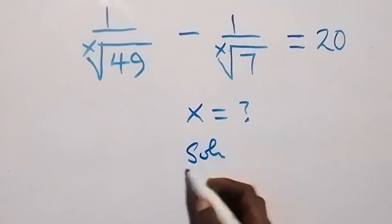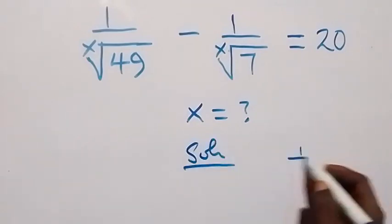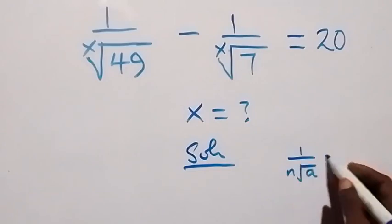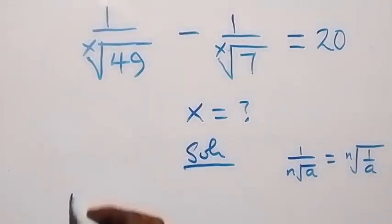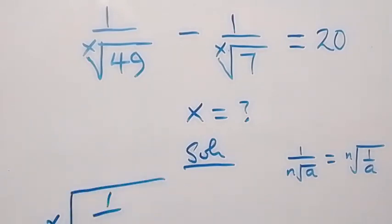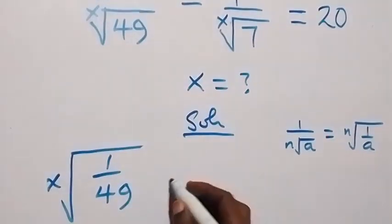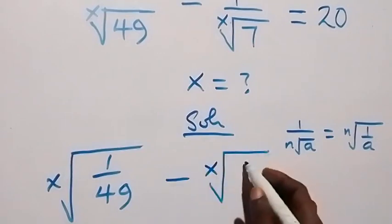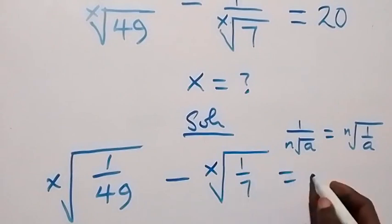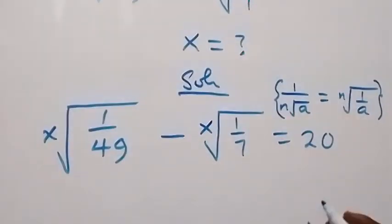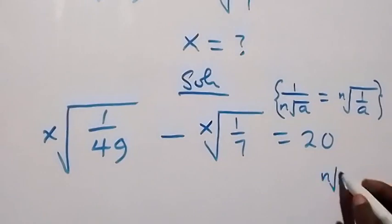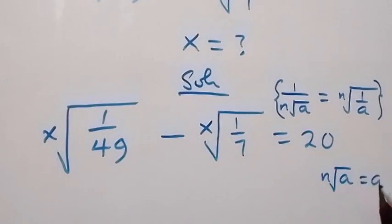From what we have here, we can write this using the format where we have 1 over the nth root of a. This is the same thing as the nth root of 1 over a. And from what we are given here, it implies that we can write this as the xth root of 1 over 49, minus the xth root of 1 over 7, which equals 21.